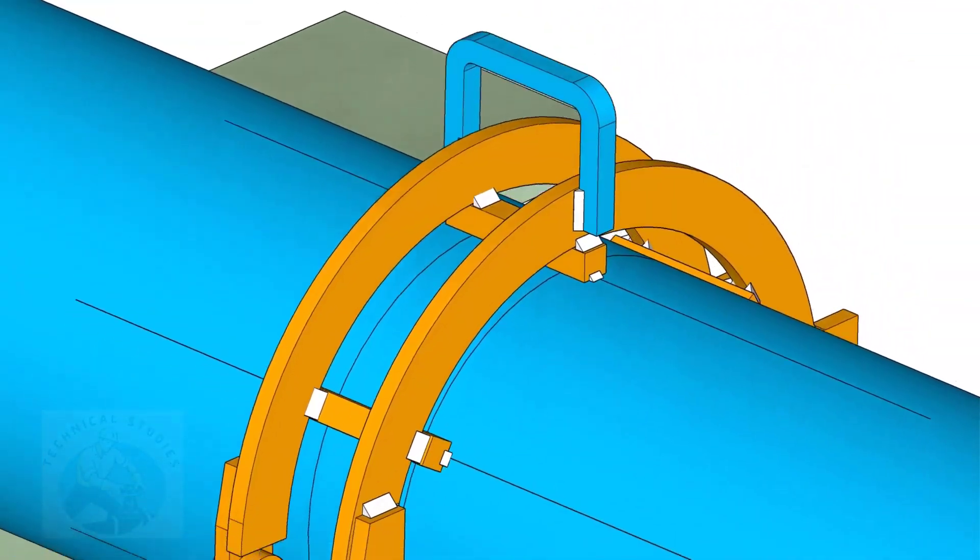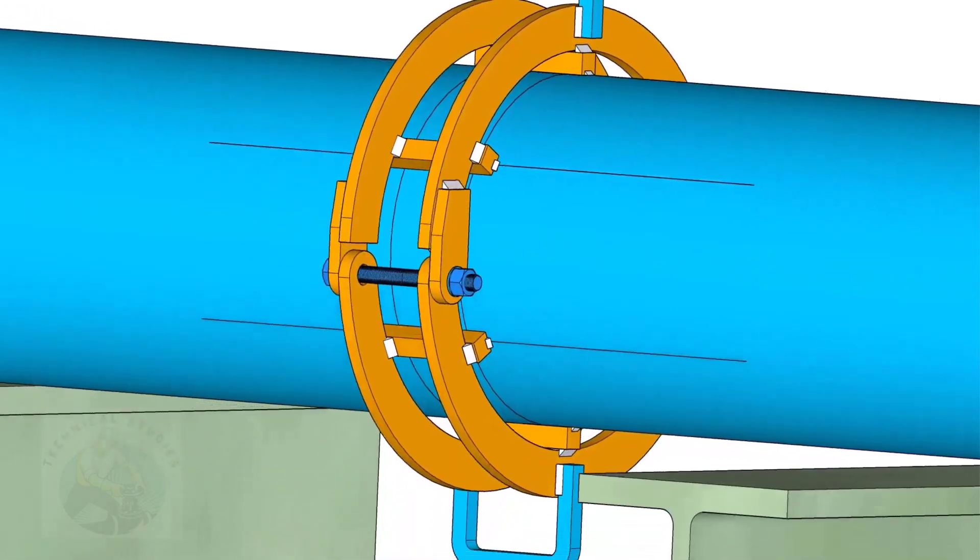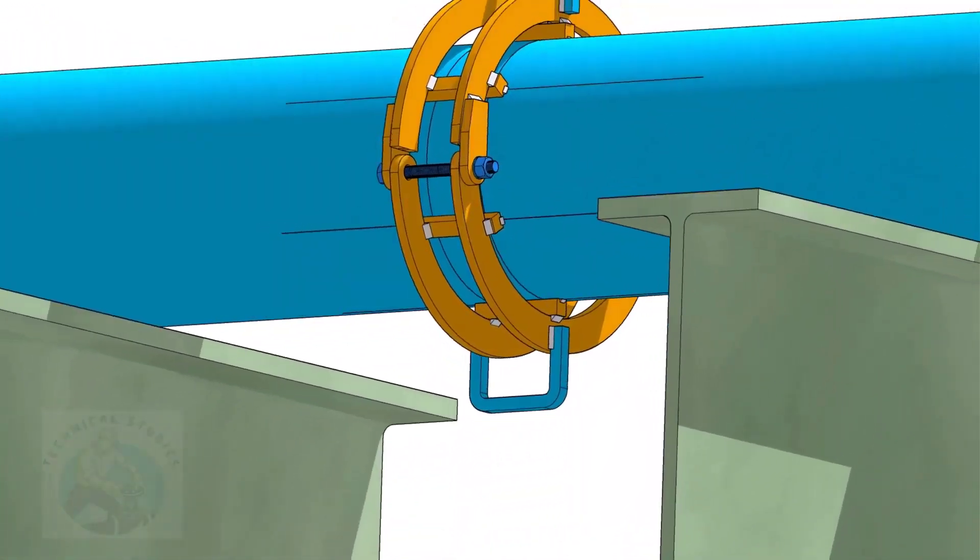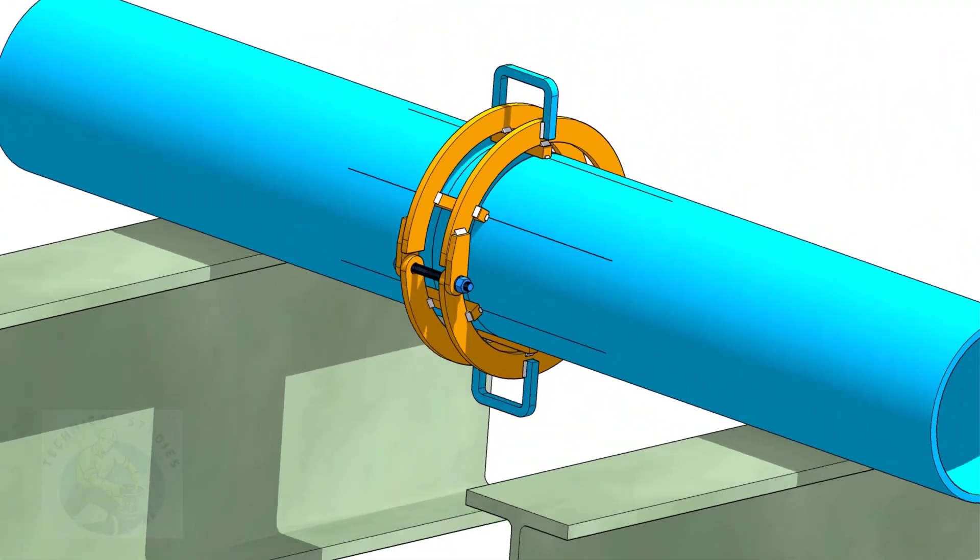After welding, cut the tacks with pipe and the square bars. Grind smooth all parts. Thank you for watching.